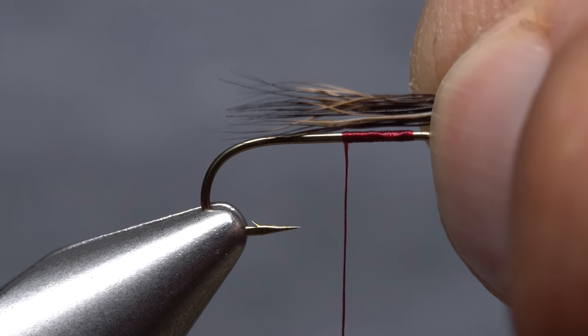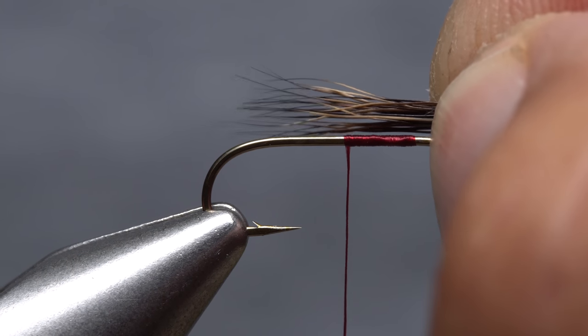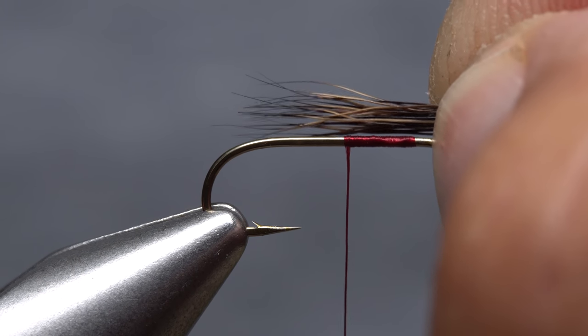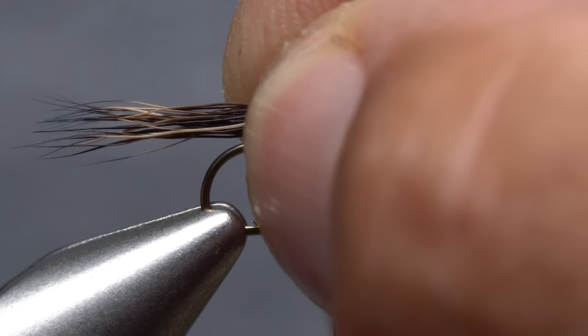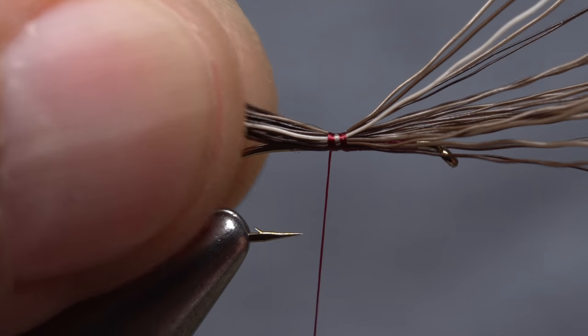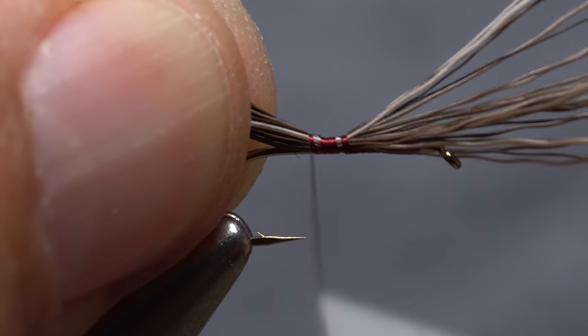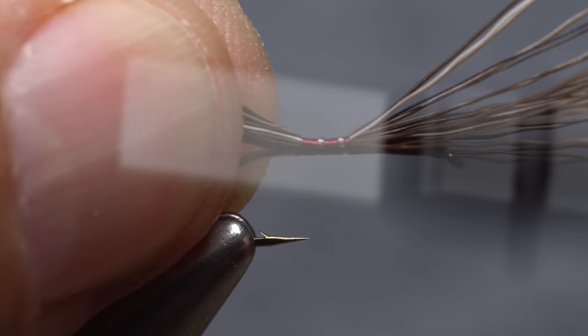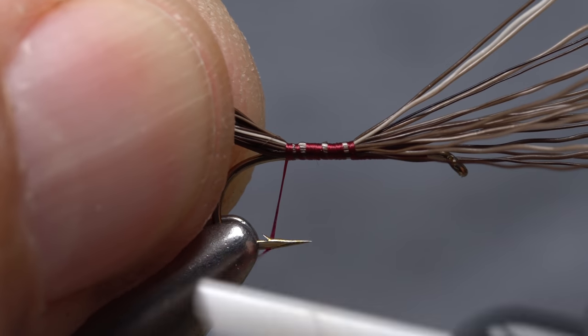Measure the hair to form a tail a hook shank in length, then transfer that measurement rearward to the start of the hook bend. Take wraps of tying thread to bind the hair to the top of the hook. Pulling slightly up on the hair as you do this will help to keep it on top of the shank. Bind the hair down all the way to the start of the hook bend.